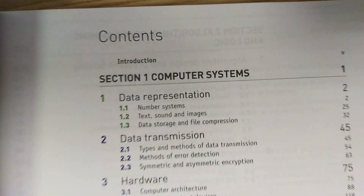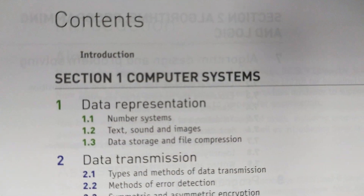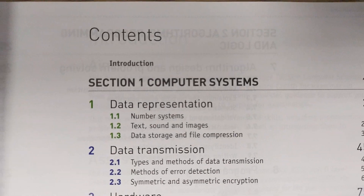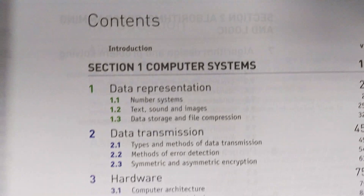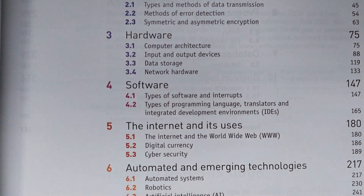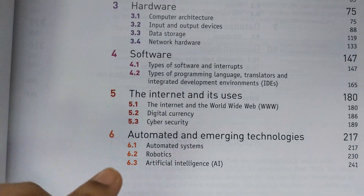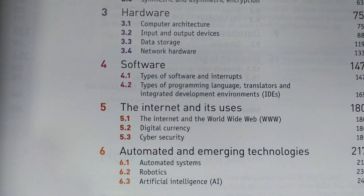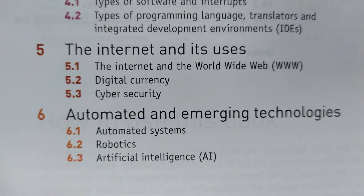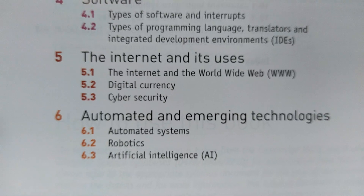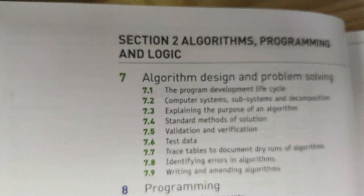In the second edition, section number one is now called Computer Systems — it is no longer Theory of Computer Science. You can see that there are six chapters here. The sixth one, Automated and Emerging Technologies, is a new chapter introduced in the new syllabus of O-level computer science.